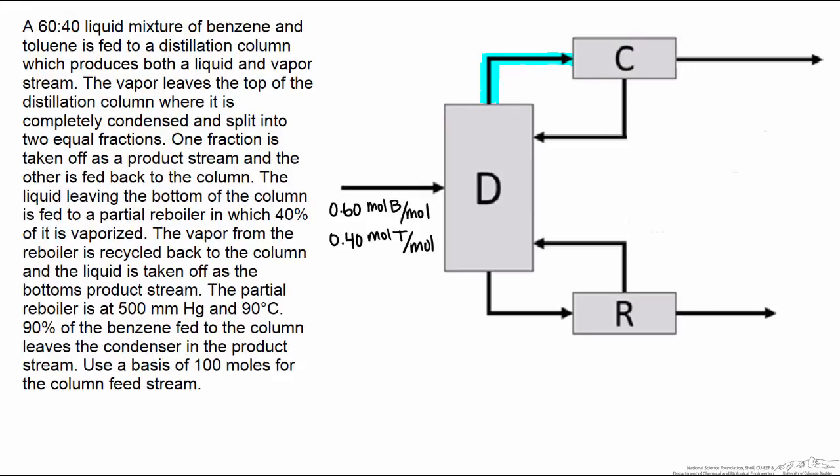One of the fractions is taken off as a product stream which is right here and the other is fed back to the column.